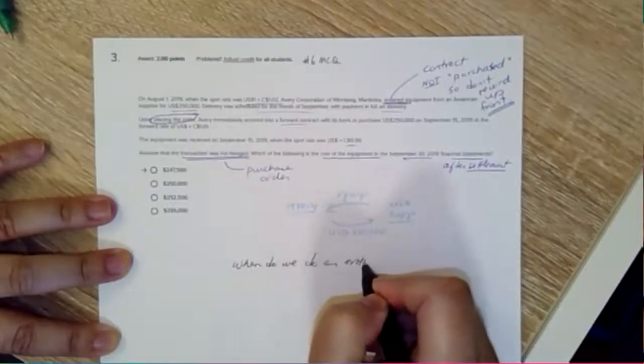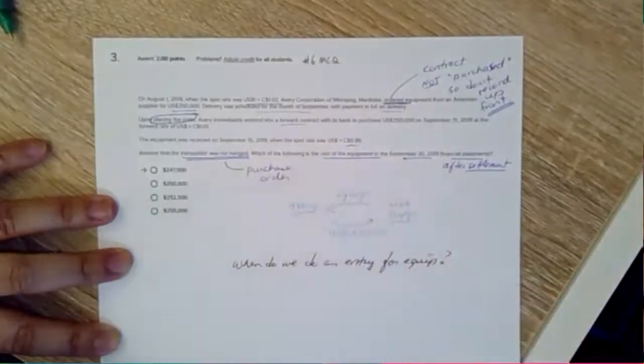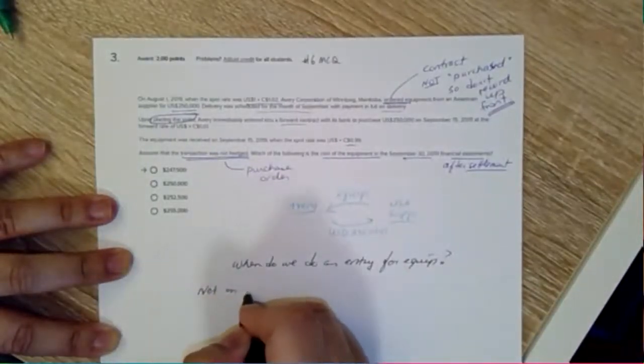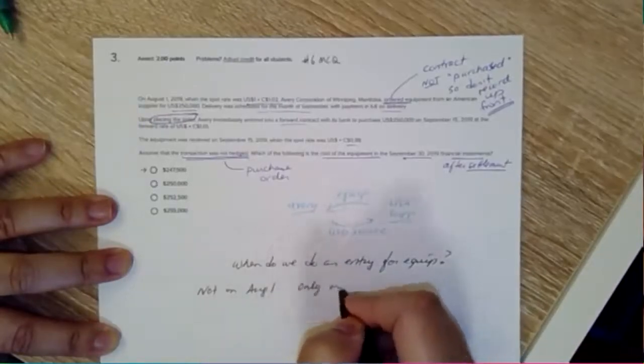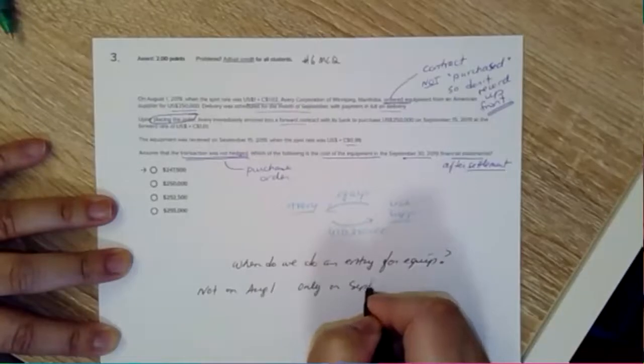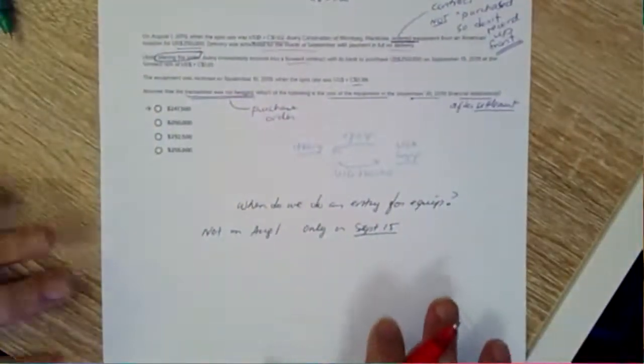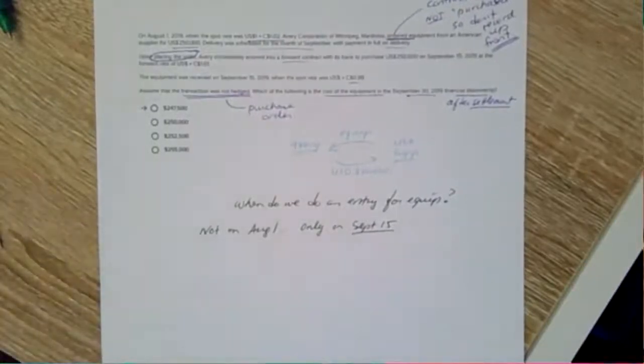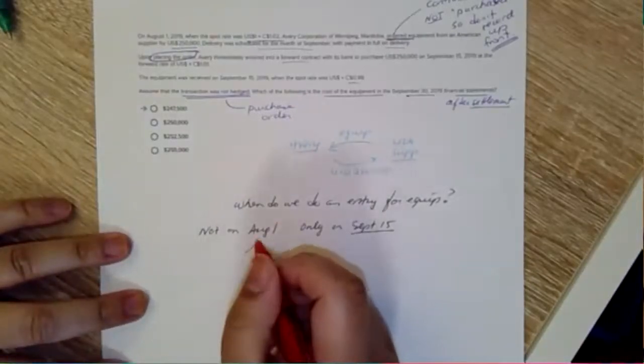We do an entry for the equipment, so that's the question: when do we do an entry? Not on August 1st, only on September 15th. There's a difference between these two because equipment is a non-monetary asset.